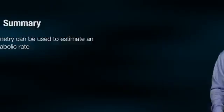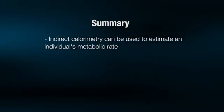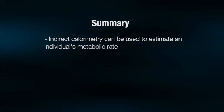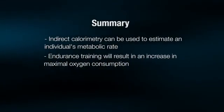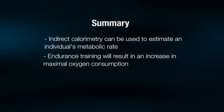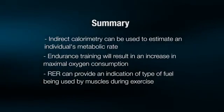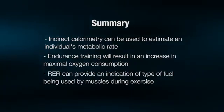Indirect calorimetry can be used to estimate an individual's metabolic rate, both at rest and during exercise. Endurance training will result in an increase in maximal oxygen consumption. The respiratory exchange ratio can provide an indication of the type of fuel used by the muscles during exercise.